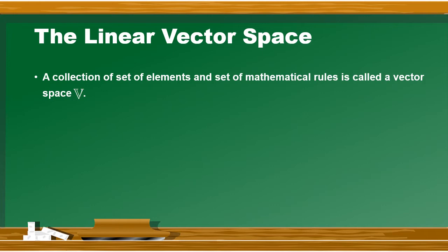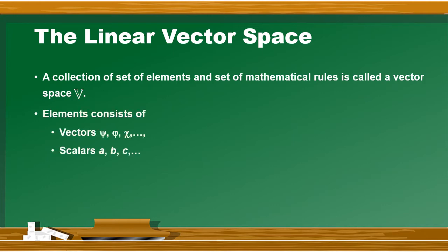Elements यहां पर दो तरह के होंगे, यानि कि हमें दो sets चाहिए होंगे. उसमें से एक set होगा vectors का - vectors को psi, phi, chi इस notation में show किया जा सकते हैं. इसी तरह से इसको V1, V2, V3 किसी भी notation में vectors को लिखा जा सकता है.